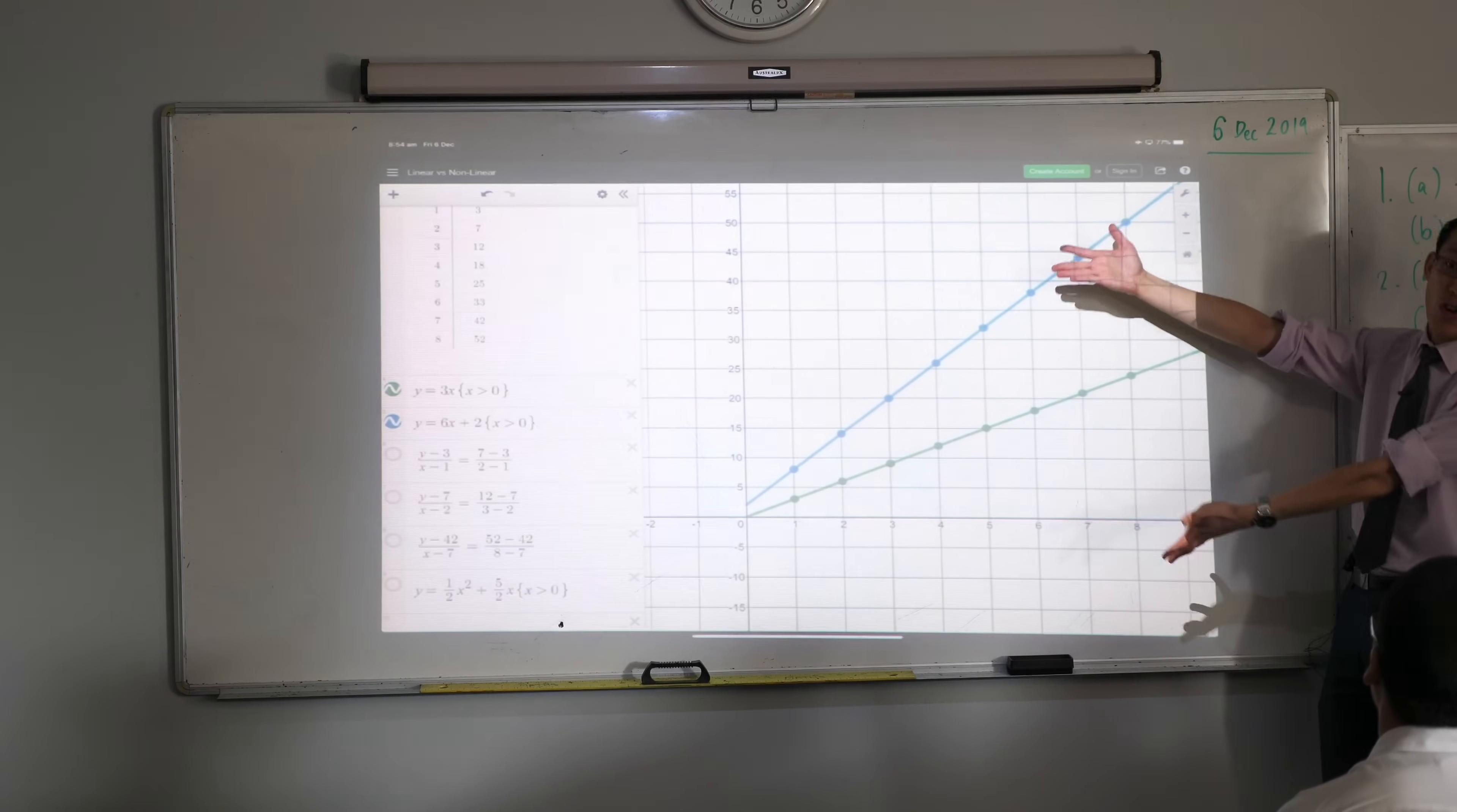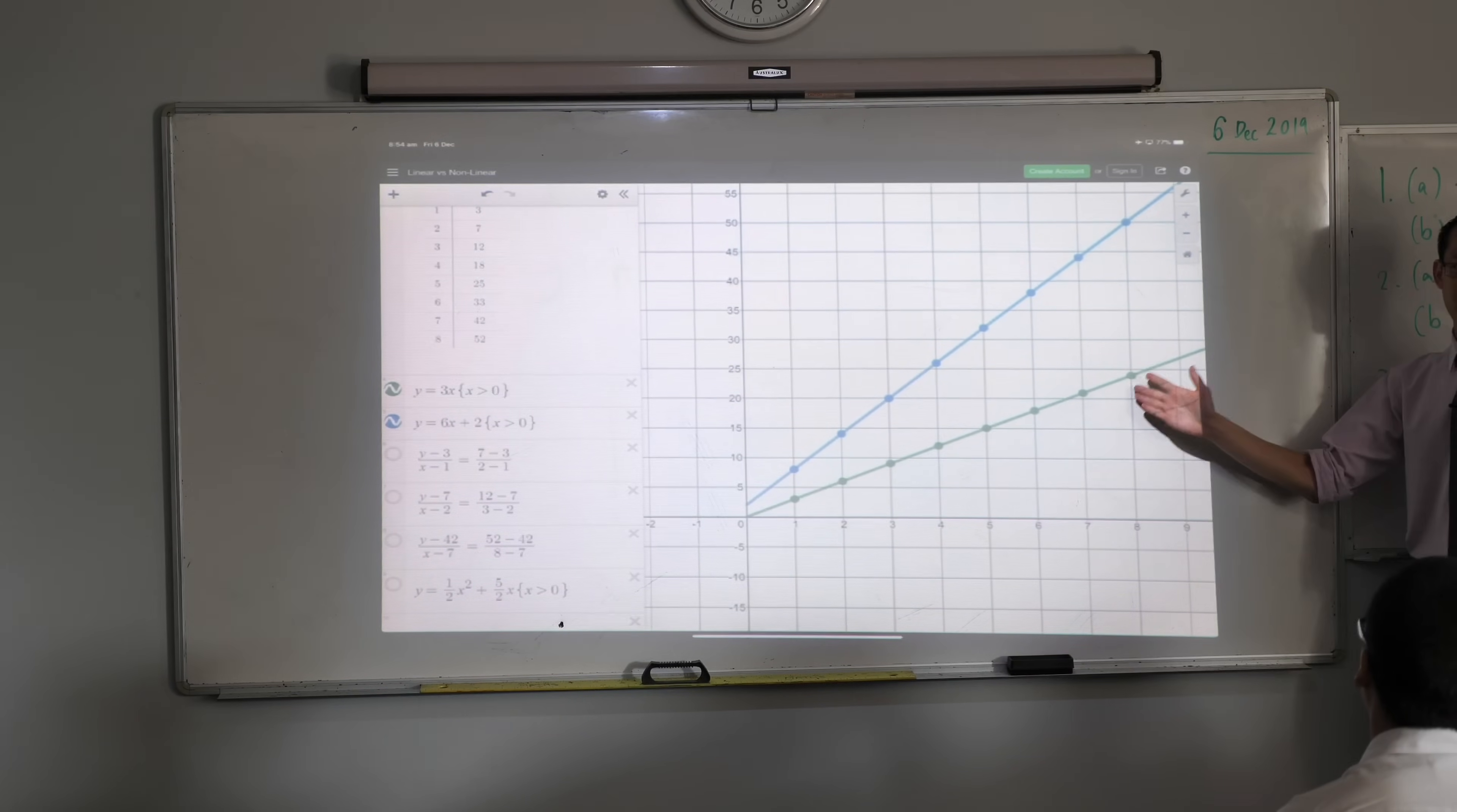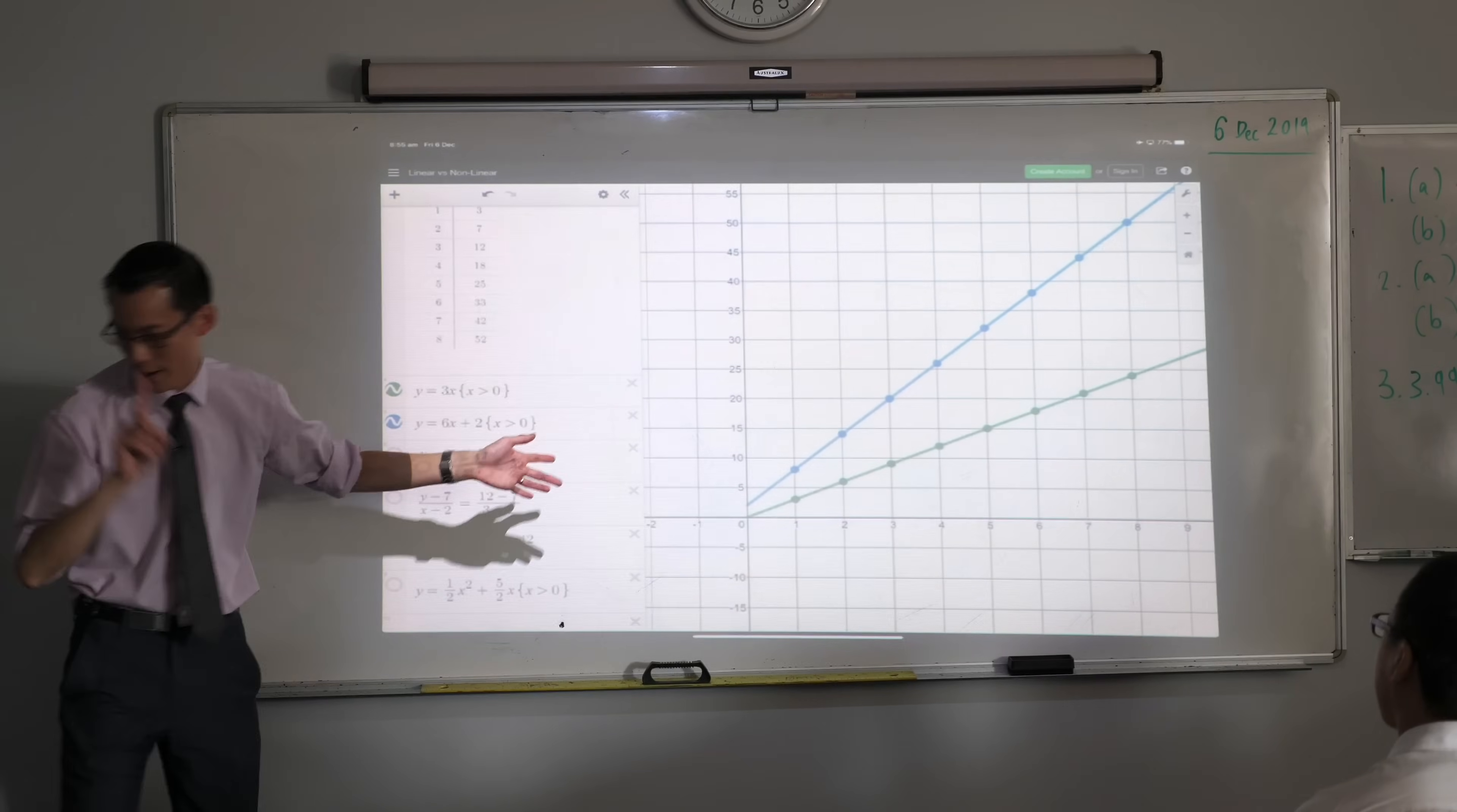Now, the phrase straight line in mathematics is actually redundant, because when you say line in mathematics, you only mean straight things, as opposed to, like, if I gave you a piece of string and it was kind of wiggly-wavy and I'm like, here's a line of string. In mathematics, a line has to be, well, straight. Okay? So, these are linear patterns, because you can connect them with a straight line.